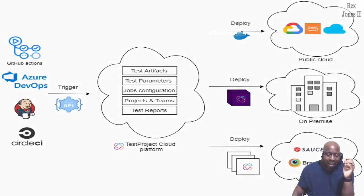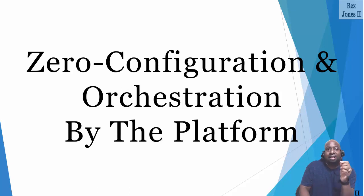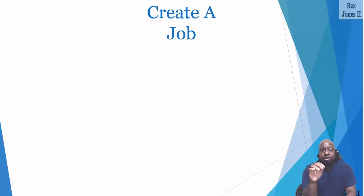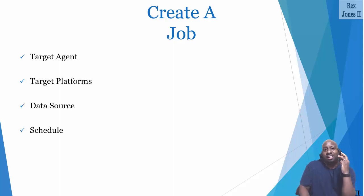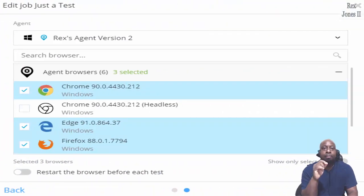The last practice is zero configuration and orchestration. It's zero configuration because a complete scheduling system and execution procedure is prepared by TestProject. However, there is one action we need to perform, and that action is to create a job. Creating a job helps us finish the CI flow. We have permission for the job to have a combination of a target agent, target platforms, data source, schedule, notification, and custom capabilities. The target agent can be a local or remote physical agent.